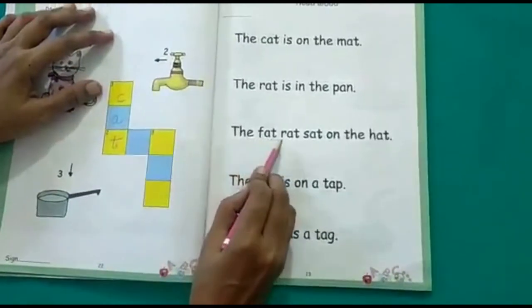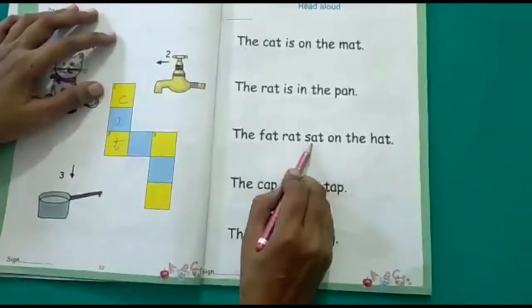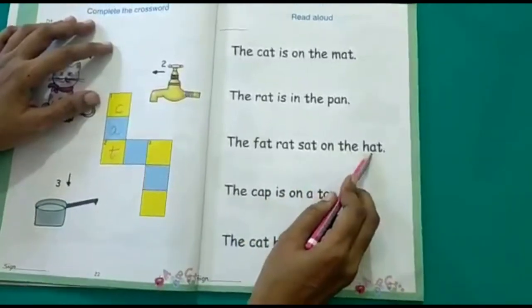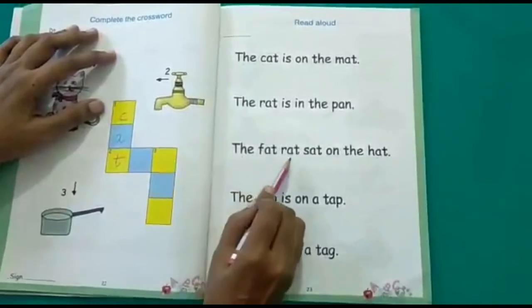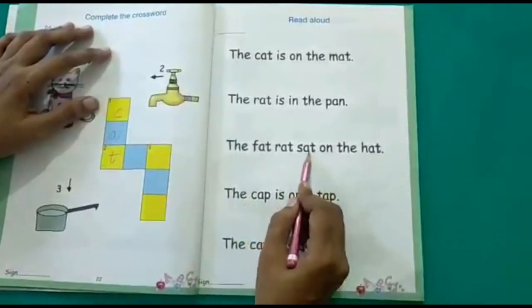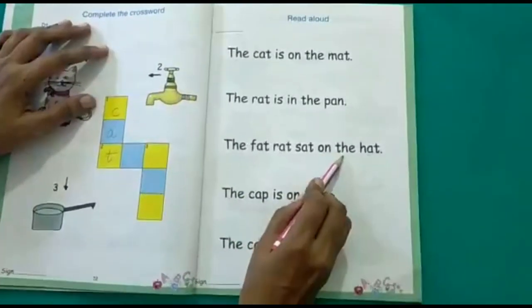Third sentence. The fat rat sat on the mat. We will repeat. The fat rat sat on the mat.